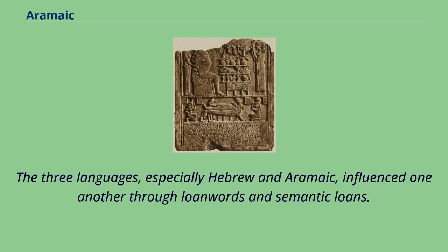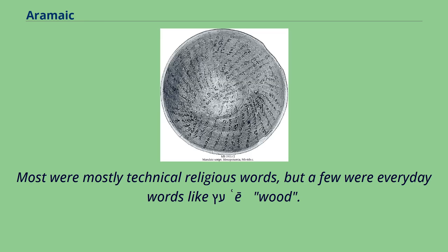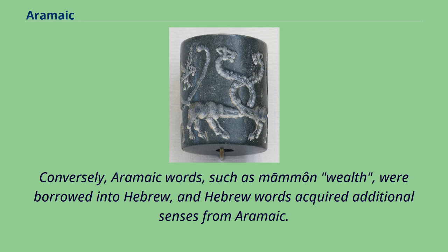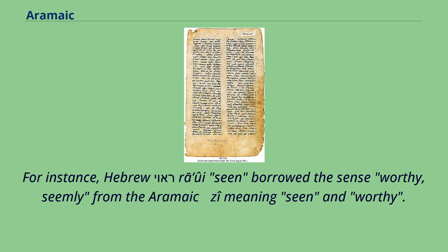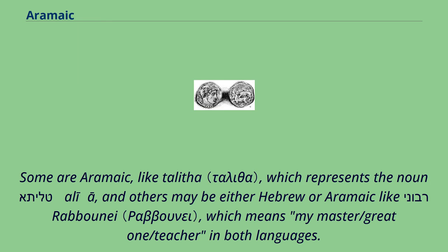The Greek of the New Testament preserved some Semiticisms, including transliterations of Semitic words. Some are Aramaic, like Talitha, while others may be either Hebrew or Aramaic, like Rabbuni, meaning my master/great-one/teacher in both languages. The 2004 film The Passion of the Christ used Aramaic for much of its dialogue, specially reconstructed by scholar William Fulco S.J., who used the Aramaic of Daniel and 4th-century Syriac and Hebrew as the basis for his work where the appropriate words were no longer known.